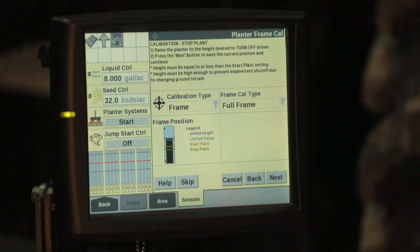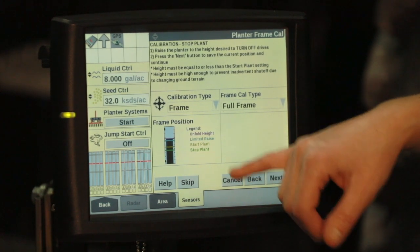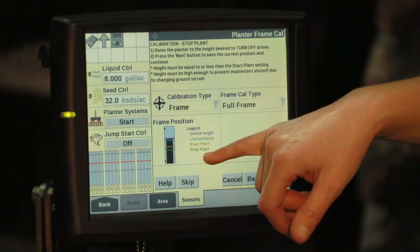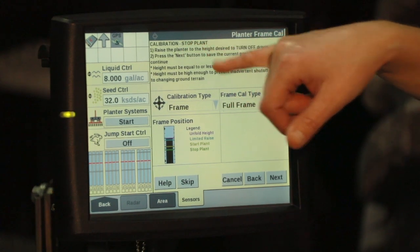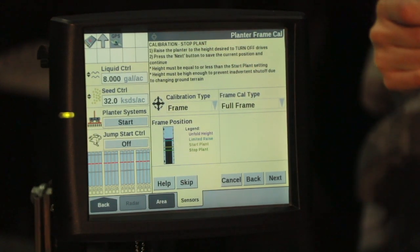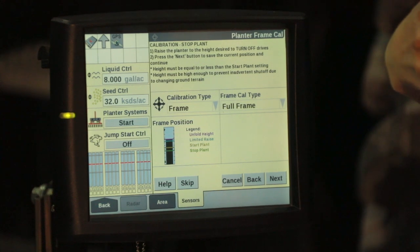Once we like where our stop plant height is set at, we are going to click next and then we're going to calibrate our start plant height. So we raise our toolbar up to the point where we want it to start planting.